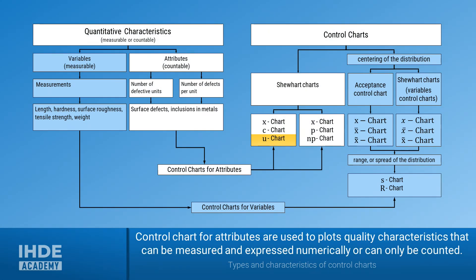This picture shows the relationship between the various characteristics and control charts used. The different characteristics are shown on the left and the different control charts on the right. The quantitative characteristics can be divided into two different categories. First, the variable characteristics. These are all characteristics that can be measured. They always have a value and a unit.